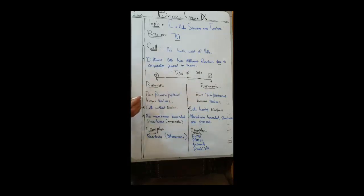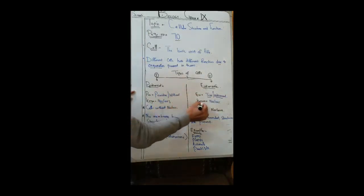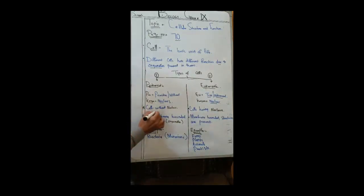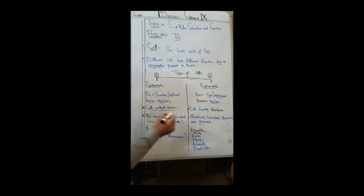Prokaryotic cells — 'pro' means primitive or without, and 'karyon' means nucleus. So prokaryotic cells are those cells which have no nucleus. Prokaryotic cells are cells without a nucleus.